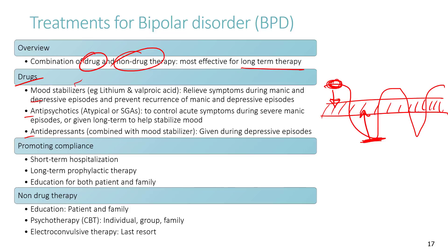Promoting compliance includes short-term hospitalization during acute manic or depressive states, long-term therapy to prevent future recurrent episodes, and education for both the patient and family. Psychotherapy is a good maintenance strategy. Electroconvulsive therapy is used as a last resort for very severe acute episodes requiring rapid resolution.